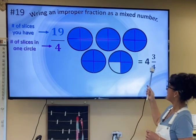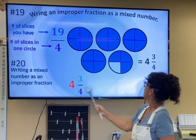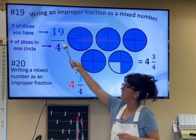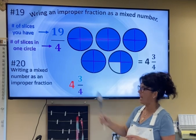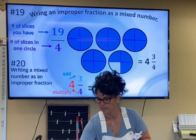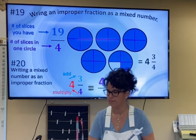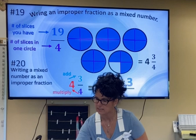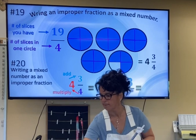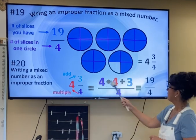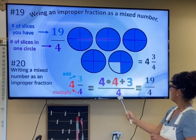So here we have our mixed number 4 and 3/4. One more time going backwards — if I wanted to rewrite 4 and 3/4 as an improper fraction, then you're going to multiply and add. So 4 multiplied by 4 plus 3, all over the same denominator 4. And 4 times 4 is 16, plus 3 more is 19 over 4.